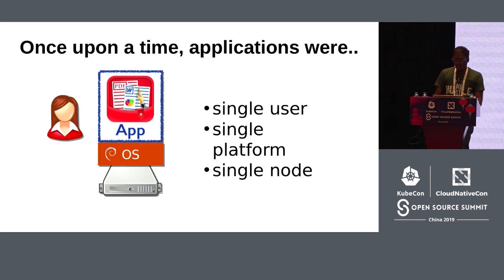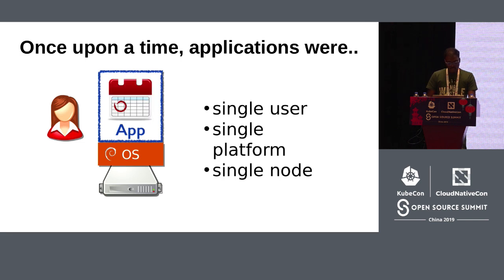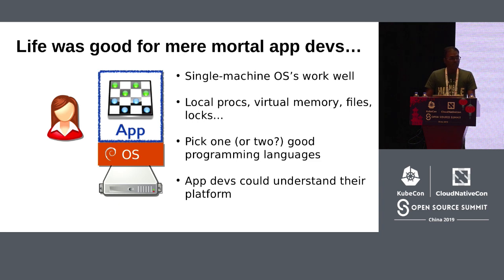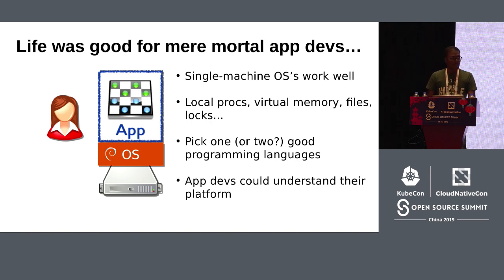Once upon a time, applications that people interacted with day-to-day were pretty simple. They typically supported a single user, ran on a single operating system, and on a standalone machine — things like text editors, document viewers, calendars, and simple games. Life was good for application programmers. Single-machine operating systems like Linux, Windows, and Mac OS provided a great layer of abstraction with building blocks like local processes, virtual memory, file system, synchronization primitives, and locks. Mostly one or two programming languages were required, and application programmers understood their platform pretty well.